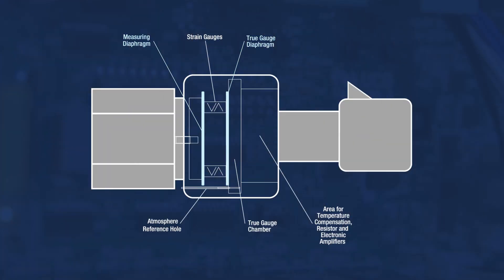Pressure transducers use a diaphragm that deflects under pressure. This deflection is converted into an electrical output signal that can be translated by the control board as a pressure.